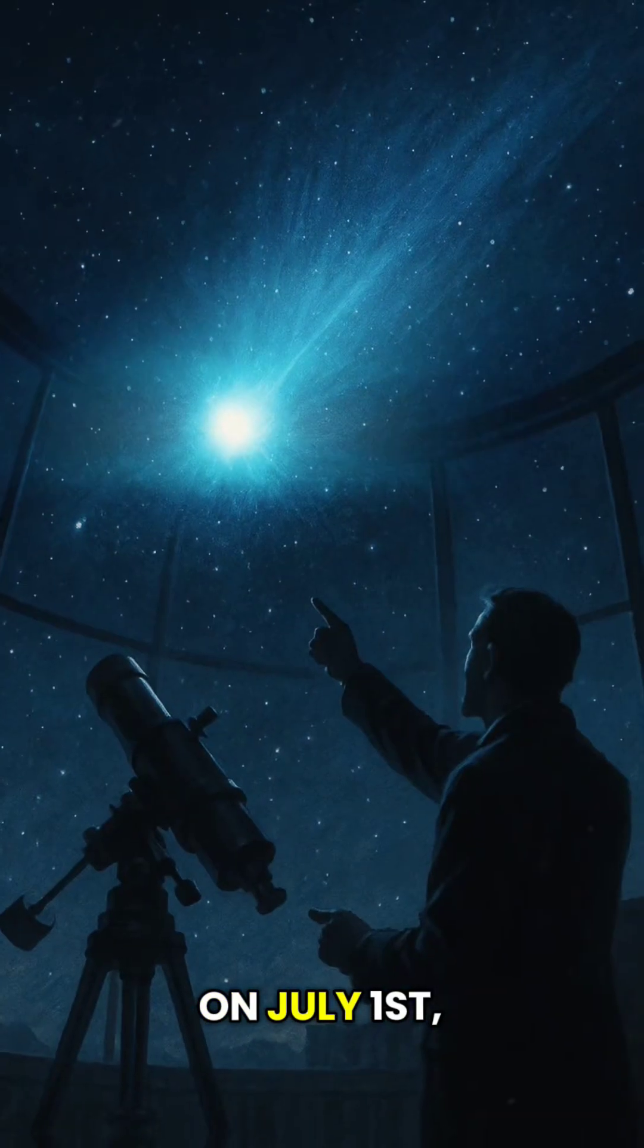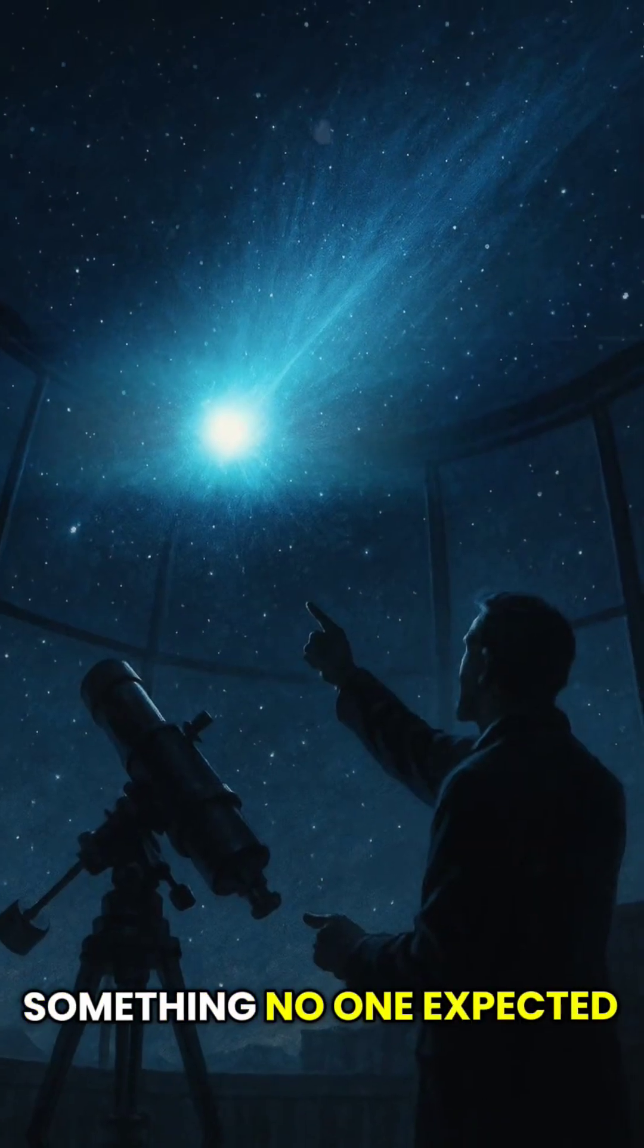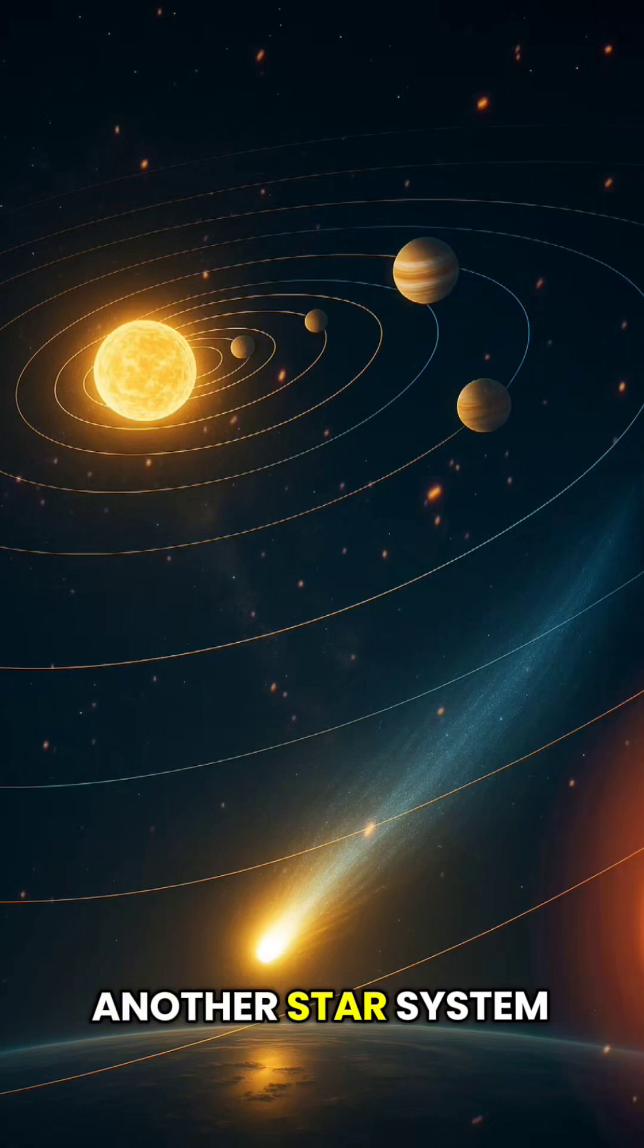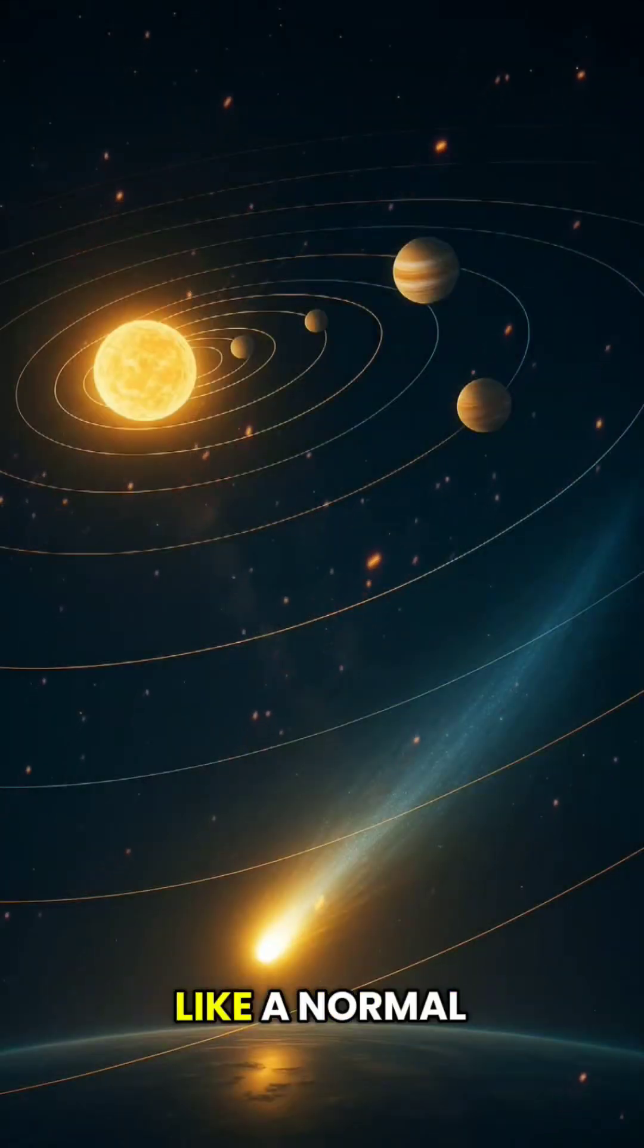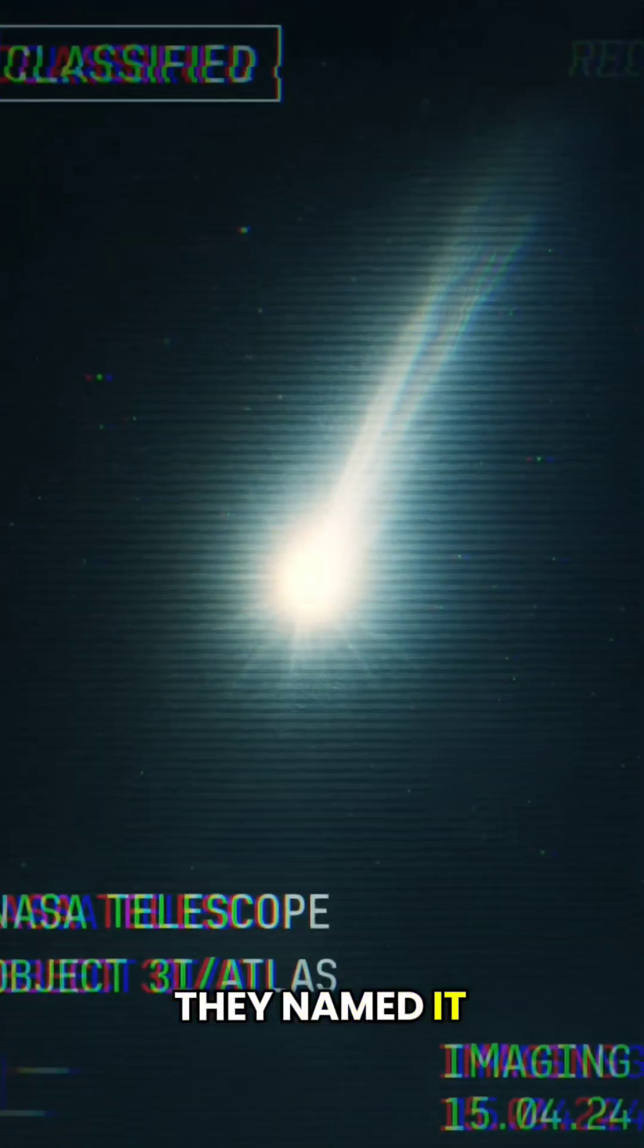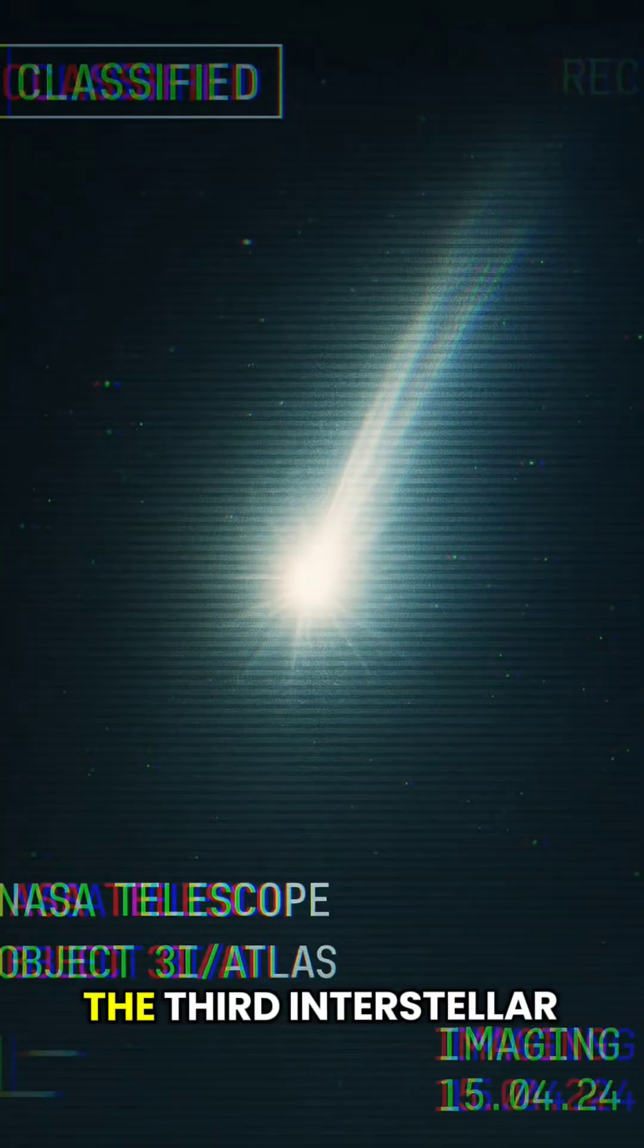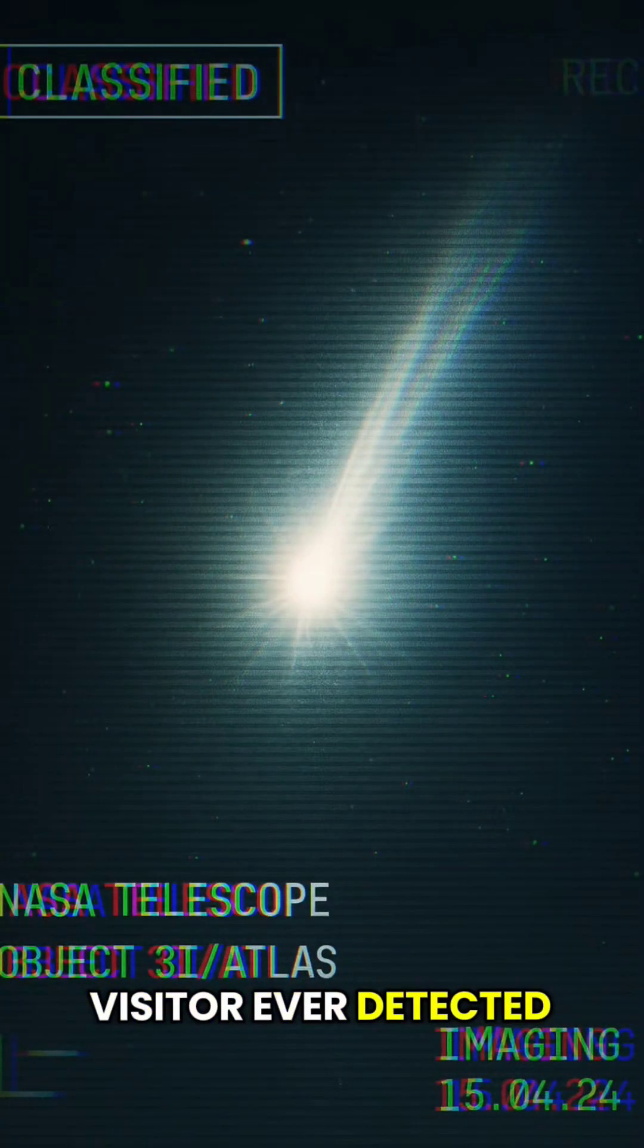July 1st, 2025, astronomers spotted something no one expected, an object from another star system, and it's nothing like a normal comet. They named it 3I Atlas, the third interstellar visitor ever detected.